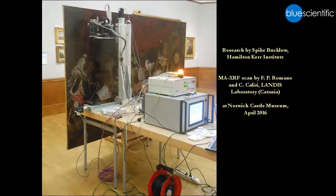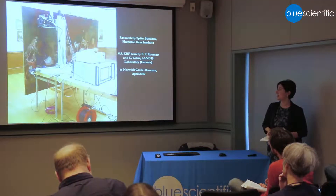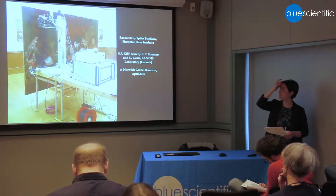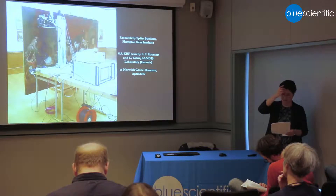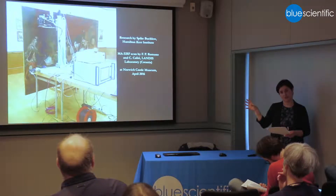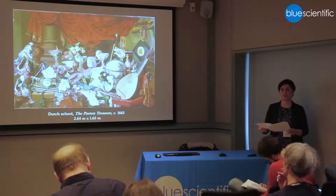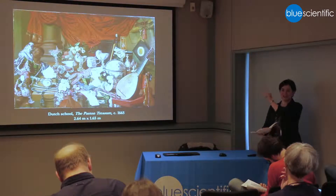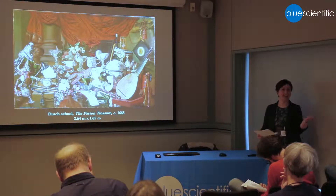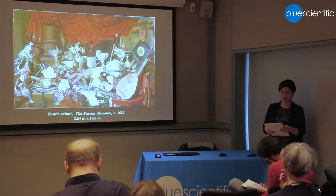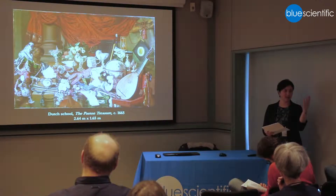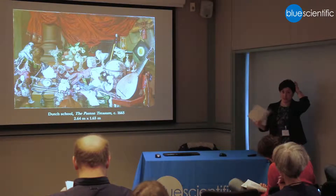The Paston Treasure was acquired by Norwich Castle Museum in 1947, where it's currently on display, and where it was analyzed last April with the Macro extract scanner developed in Catania. The painting will be the subject of an exhibition next year. Norwich Castle Museum in partnership with the Yale Center for British Art are trying to reunite as many depicted objects as they can with the painting for the first time in 350 years. Spike has been researching the painting for the exhibition.